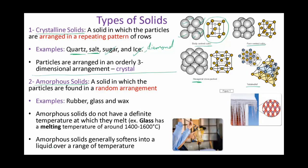The second type is called the amorphous solid — the opposite of crystalline. The particles here are found in random arrangement. In this case we call it amorphous solid. They don't have any geometrical shape, but they are adjacent to each other randomly. Examples include rubber, glass, and wax.